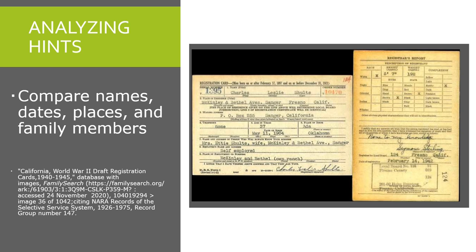When analyzing hints and looking at a record image, compare the names, dates, places, and family members. For this draft registration card example, when I clicked into the image I saw that the person who would always know my grandfather's address was Mrs. Eddie Schultz, his wife, and they were living in Sanger, California. This matched what I knew — that was my grandmother's name, they were in Sanger, and his date of birth was May 11, 1904, in Oklahoma, which also matched. So I felt very comfortable attaching this record.